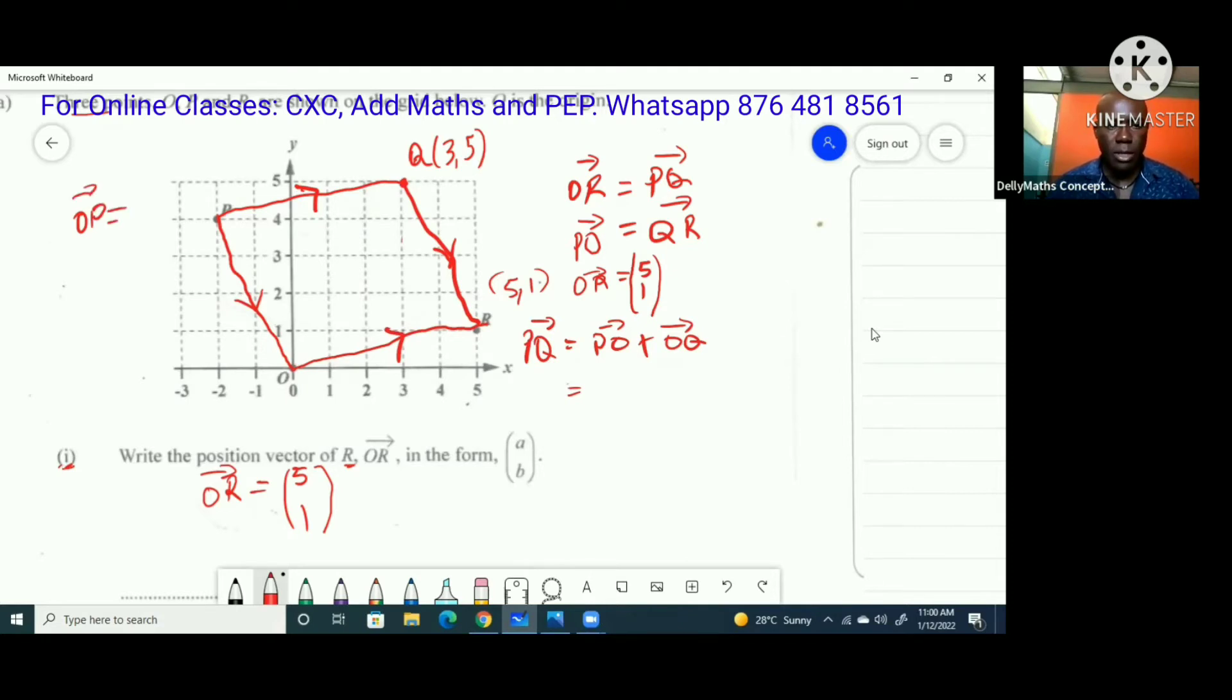OP is (-2, 4), that means if I'm going PO, I'm going (2, -4) in the other direction. So PO is (2, -4) and I want to add that to OQ. Remember OQ is (3, 5). When you add this you end up with (5, 1). We're seeing that OR and PQ are equal, and that's one of the proofs - these two sides OR and PQ should be equal and we just saw that.